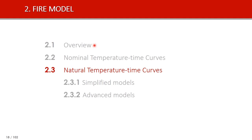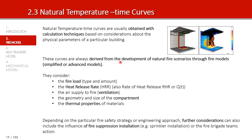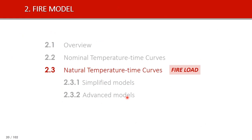Once we have seen this review of nominal temperature curves, let's move to natural temperature curves, which are always derived from the development of natural fire scenarios through simplified or advanced models. These models can explicitly consider the fire load, the heat release rate, the ventilation, the properties of the compartment, and the thermal properties of the materials. Depending on the particular approach, we can even consider the influence of fire suppression installations, such as sprinklers, or the actions of fire teams. We will start reviewing two concepts: fire load and heat release rate.